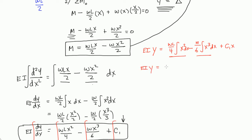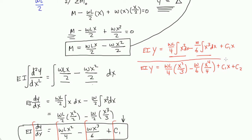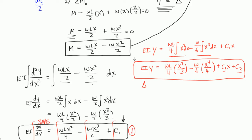EI times y is equal to WL over 4 times — the integral of x squared is x cubed over 3 — minus W over 6, and then x cubed gives x to the 4th over 4, plus C1x. I have to add another constant because I integrated one more time. So now we have these two equations, which will tell us our slope and our deflection. I'll call this equation 1 and this equation 2.